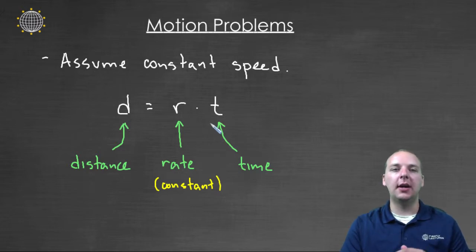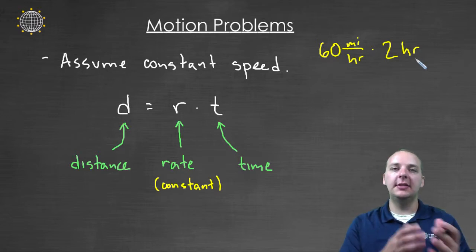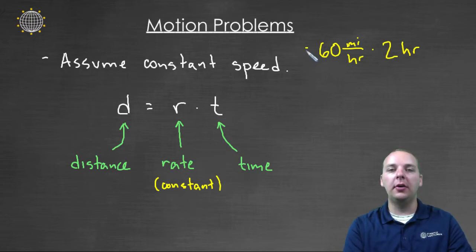Distance equals rate times time. Every one of these motion problems revolves around that particular formula there. And this formula is something that we kind of intuitively know. I mean just think about it. Let's say you and I were in a car. Let's say this car was traveling sixty miles per hour. And we stayed in the car for a total of two hours. So, how far did we travel? Sixty miles per hour for two hours. I think it's pretty clear we would have gone a total of one hundred and twenty miles.